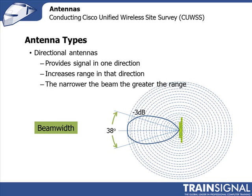In a warehouse deployment where you want coverage down the aisles, an antenna with around a 35–38 degree beam width would be good. If you're putting an antenna on a wall in an office you'd want a 180-degree beam width for broad coverage. If deploying in a corner of an office, you'd want about a 90-degree beam width. Understanding these specifications when reading antenna datasheets is very important.